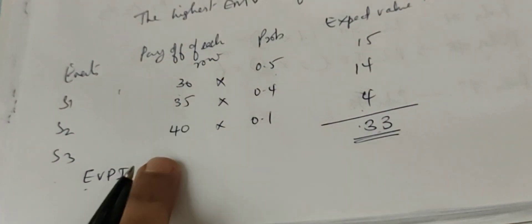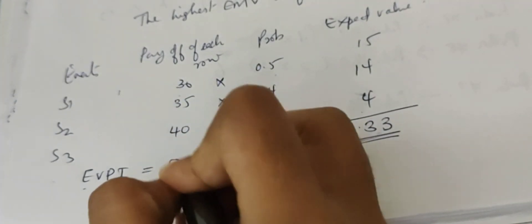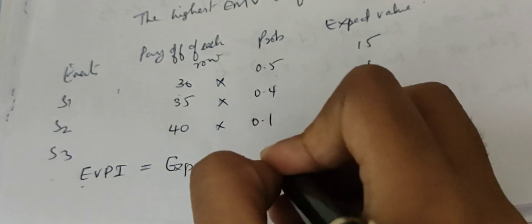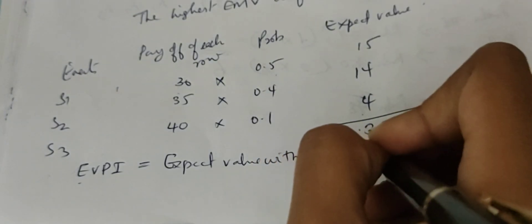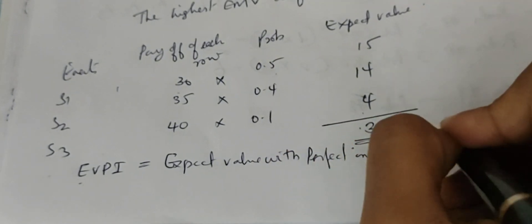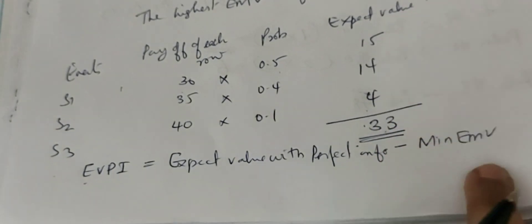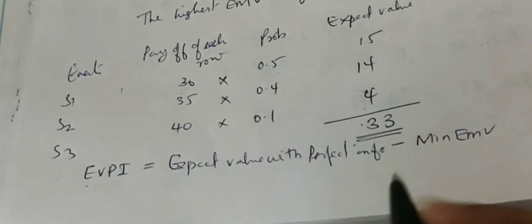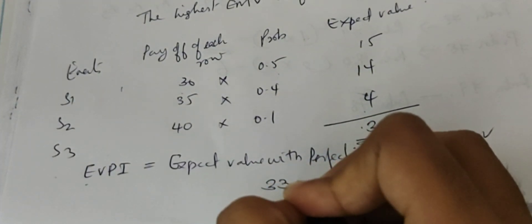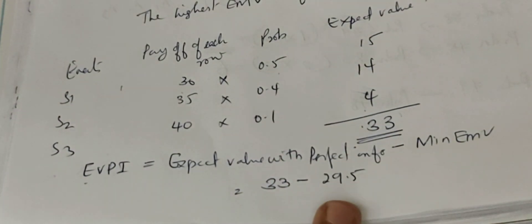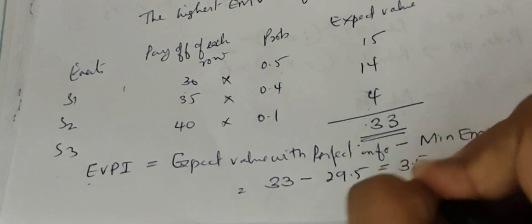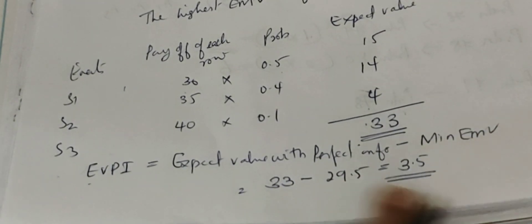Therefore, EVPI equals expected value with perfect information minus the optimum EMV. That is 33 minus 29.5, which equals 3.5. So EVPI is 3.5.